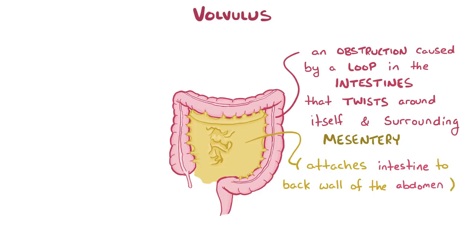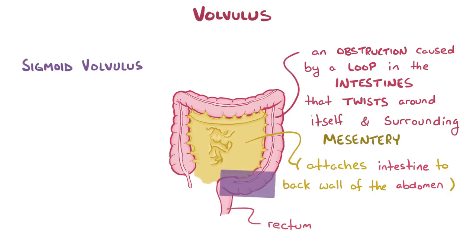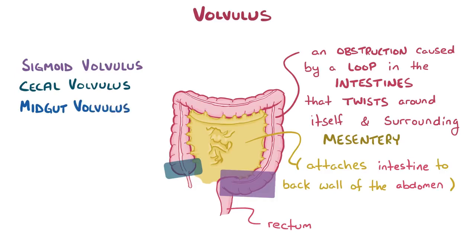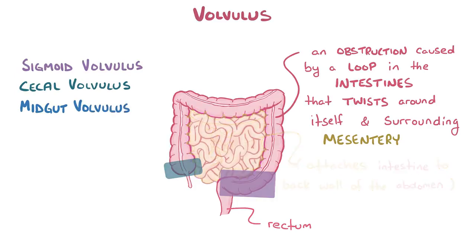The three most common types of volvulus are a sigmoid volvulus, which happens in the last part of the large intestine leading to the rectum; a cecal volvulus, which happens in the beginning of the large intestine; and a midgut volvulus, which happens in the small intestine.